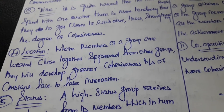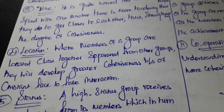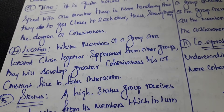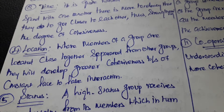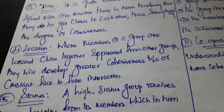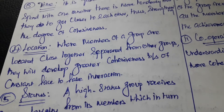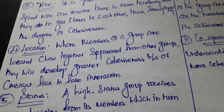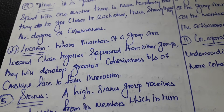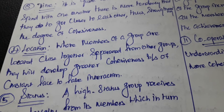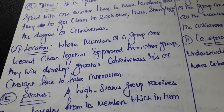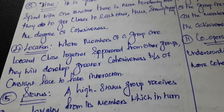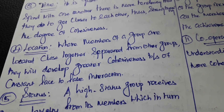The next factor is location. Where members of a group are located close together and separated from other groups, they will develop greater cohesiveness because of constant face-to-face interaction. If members are situated very close to each other, there is a lot of possibility of continuous interaction, through which group cohesiveness will be greater.